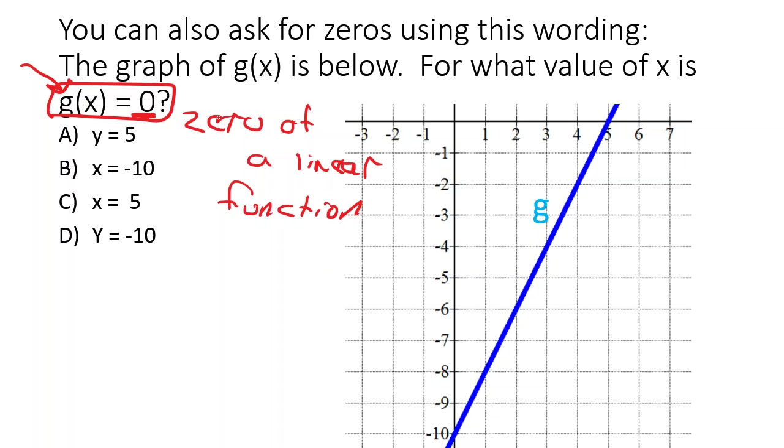And remember, 0s are the exact same thing as x-axis intercepts. So if we follow the blue line along to where it hits the x-axis, it hits the x-axis right here at 5. So x is equal to 5 is our 0. Or it's the value of x that makes g of x equal to 0.